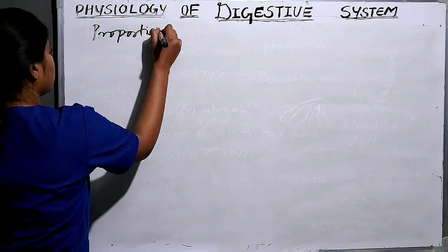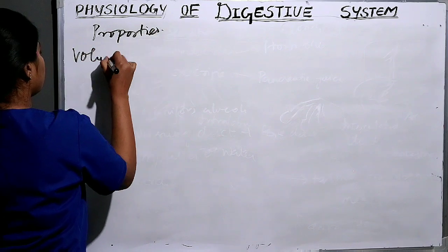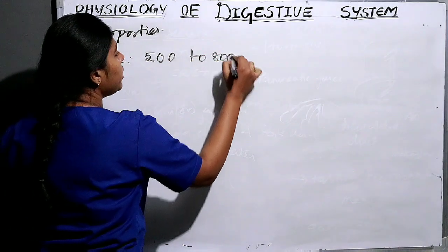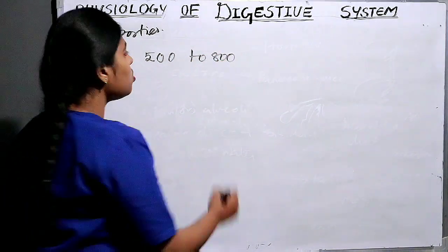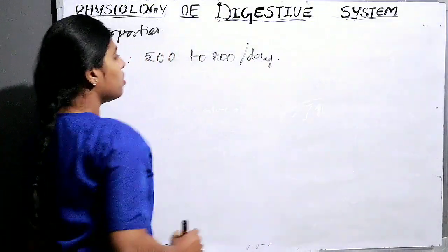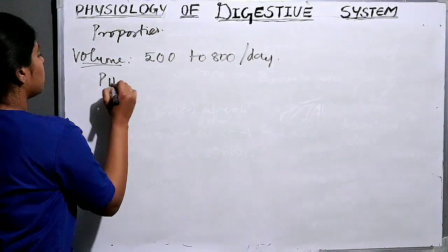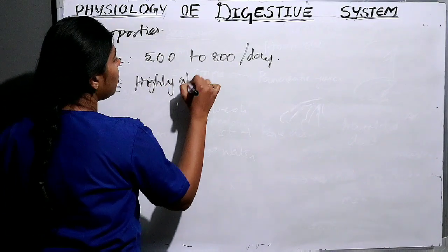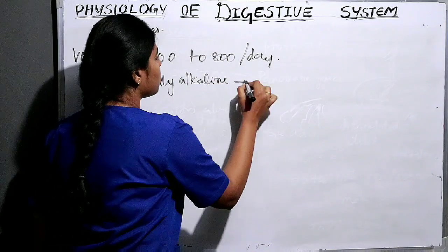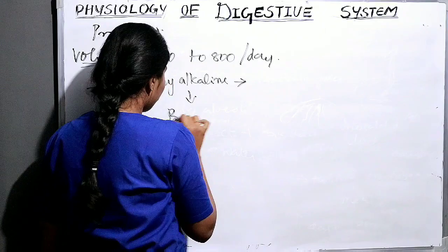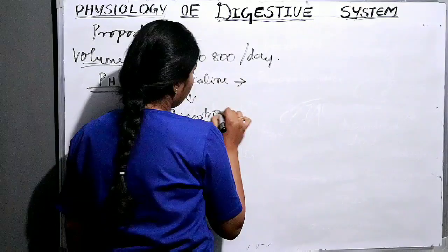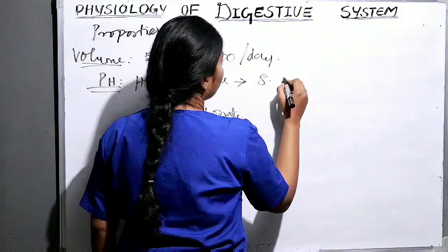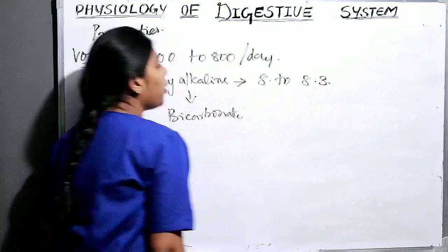Next, the properties of pancreatic juice. First, volume: 500 to 800 ml of pancreatic juice is secreted per day. Second, pH: it is highly alkaline, due to the presence of bicarbonate. The pH ranges from 8 to 8.3.